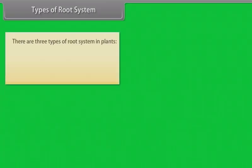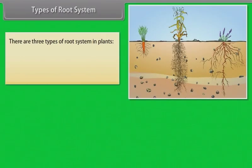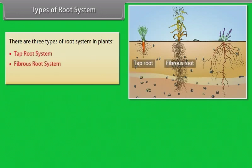There are three types of root system in plants: tap root system, fibrous root system, and adventitious root system.